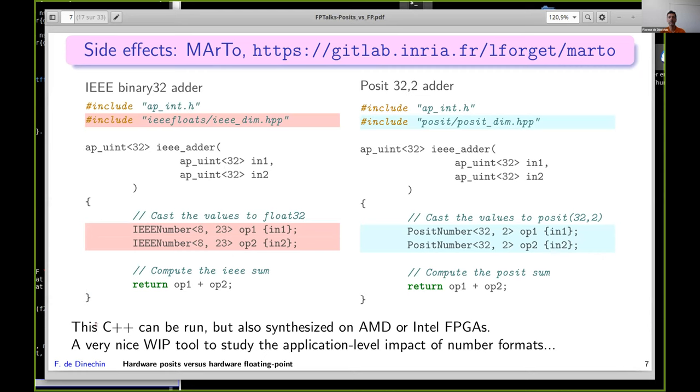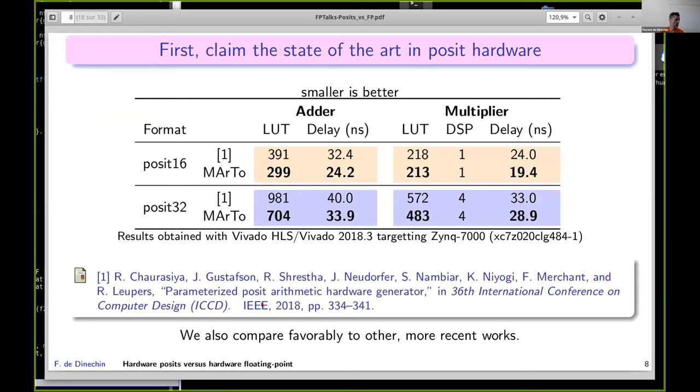You can find it here. It's a C++ header-only library, so it can be run in simulation using a C++ compiler, but it's also synthesizable so you can get hardware out of it. You declare numbers like this, use them like this, and the operations by the magic of C++ will instantiate the proper components in floating-point here, in posit here. It's all parametric in the parameters of the formats and exponent size. You can study on one side the accuracy of your application, and on the other side the cost of its hardware implementation.